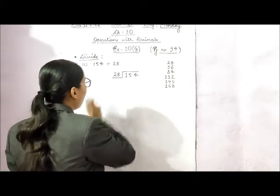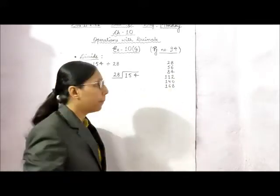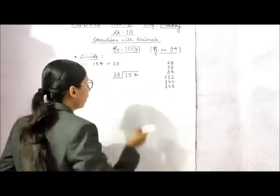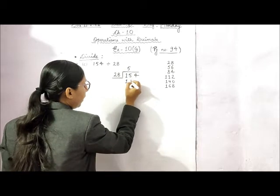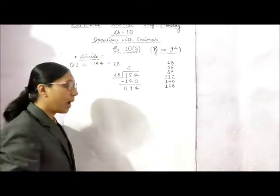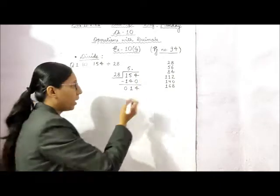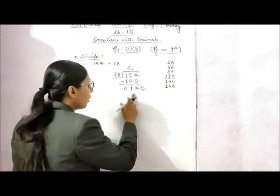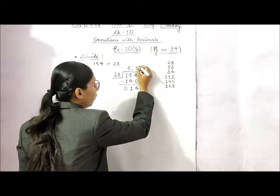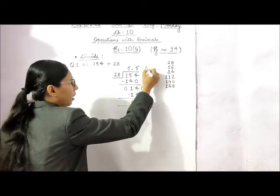Next we are going to divide 154 by 28. 28 is the divisor and 154 is the dividend. I have written the table of 28 here. 154 is not in the table, so we will take 5 times 140. There will be 14 in the remainder. We cannot divide 14 by 28, so we will put a decimal point in the quotient and a 0 with the remainder. Now this is 140, and 140 comes in the table of 28 five times. We write 5 in the quotient, subtract, remainder is 0, and the answer is 5.5.